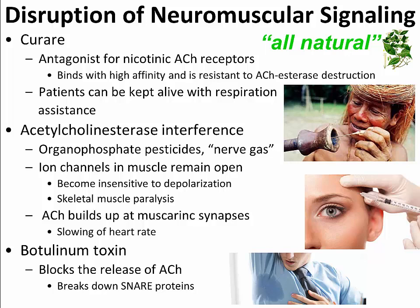Lastly, botulinum toxin destroys snare proteins and therefore prevents the release of acetylcholine, causing paralysis and death — just like curare — as a result of failure of the diaphragm to contract. The mechanism is different but the end result is the same. Botulinum toxin is one of, if not the most potent toxin known to man, produced by clostridial bacteria. It is also used in controlled doses for Botox and to alleviate hyperhidrosis or excessive sweating.